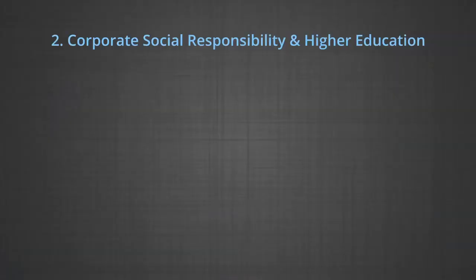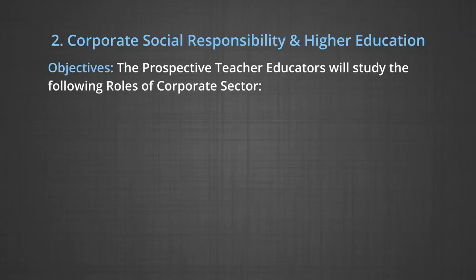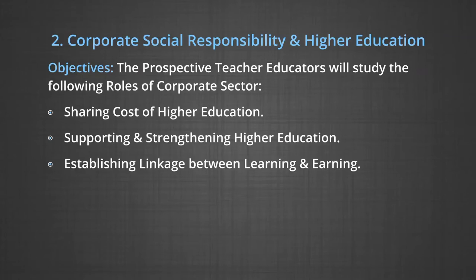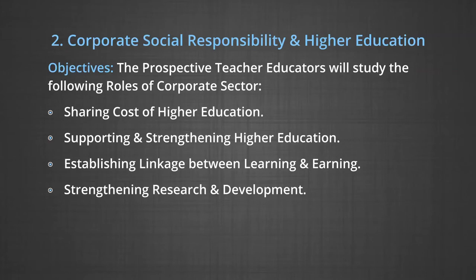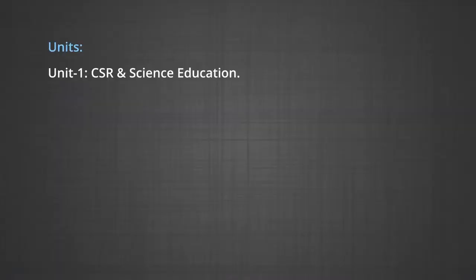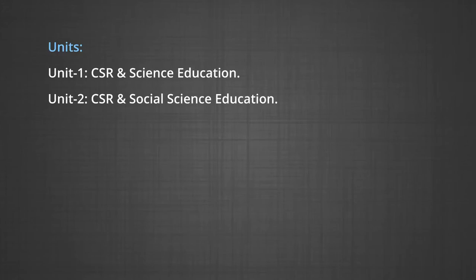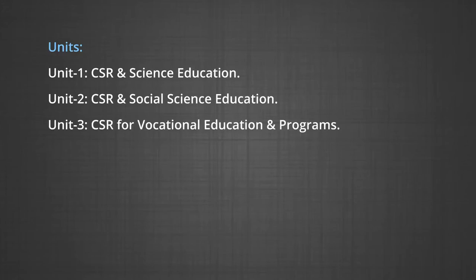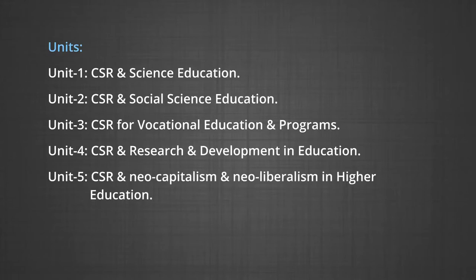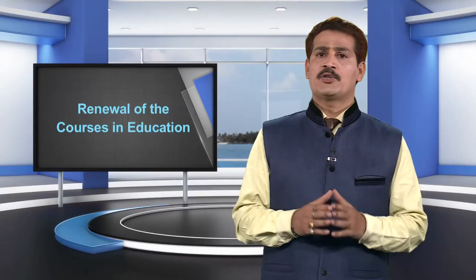The second proposed course is Corporate Social Responsibility and Higher Education. Its objectives include: prospective teacher educators will study the roles of the corporate sector in sharing cost of higher education, supporting and strengthening higher education, establishing linkage between learning and earning, and strengthening research and development. Its units cover CSR and science education, CSR and social science education, CSR for vocational education and programs, CSR and research and development in education, and CSR and neo-capitalism and neo-liberalism in higher education.